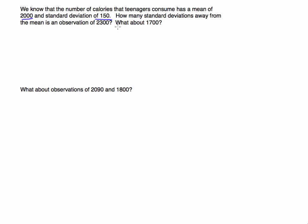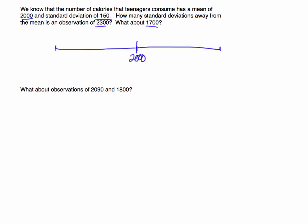How many standard deviations away from the mean is an observation of 2,300, and what about 1,700? In this example, I'm looking to have my answer in the number of standard deviations away. So what I'm going to do is draw a number line, and on this number line I'm going to put the mean in the middle, which is 2,000. I know if I go one standard deviation to the right, I'm adding 150, so I would be at 2,150.